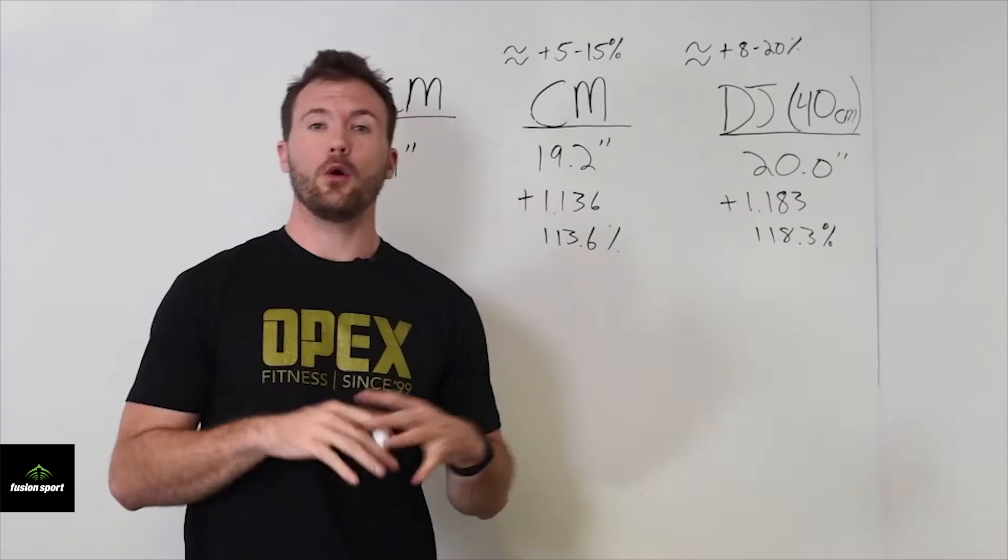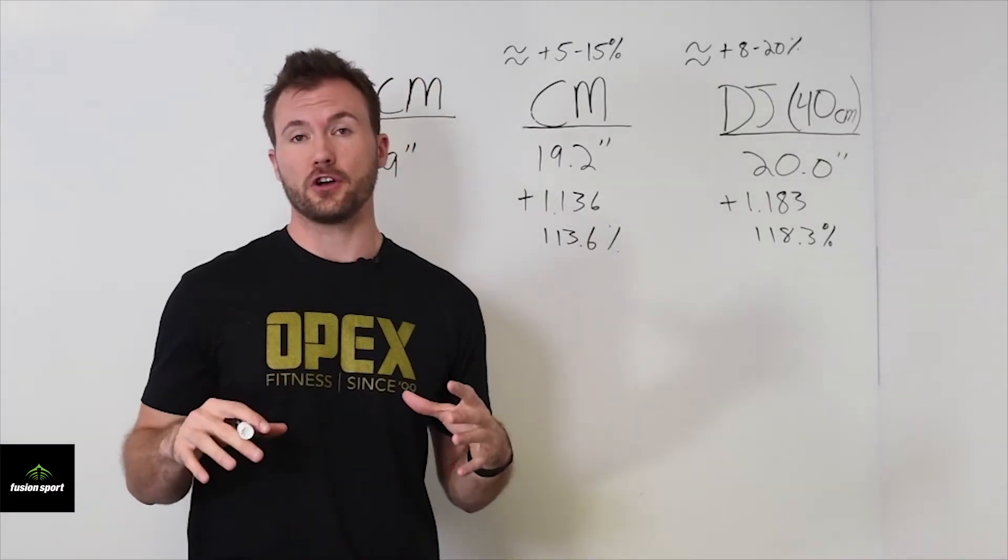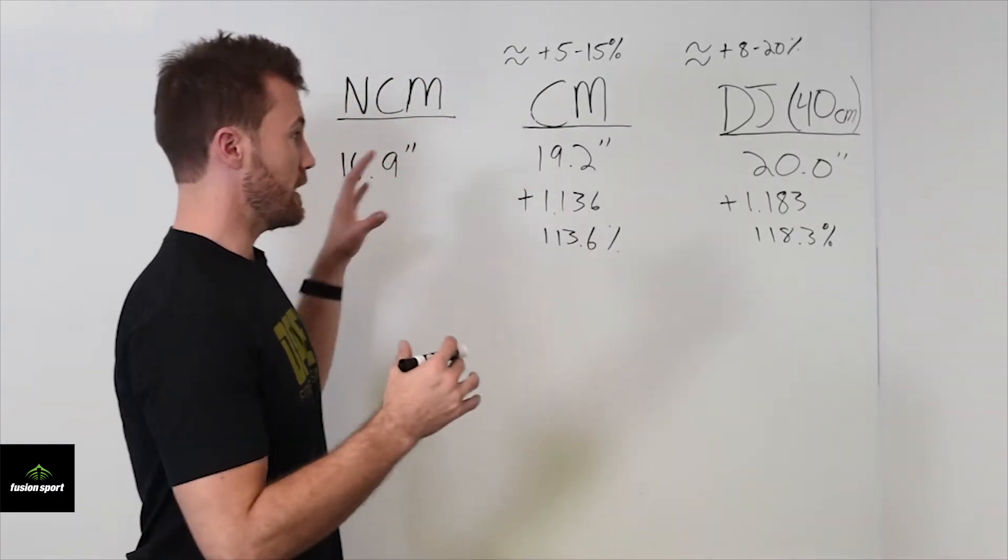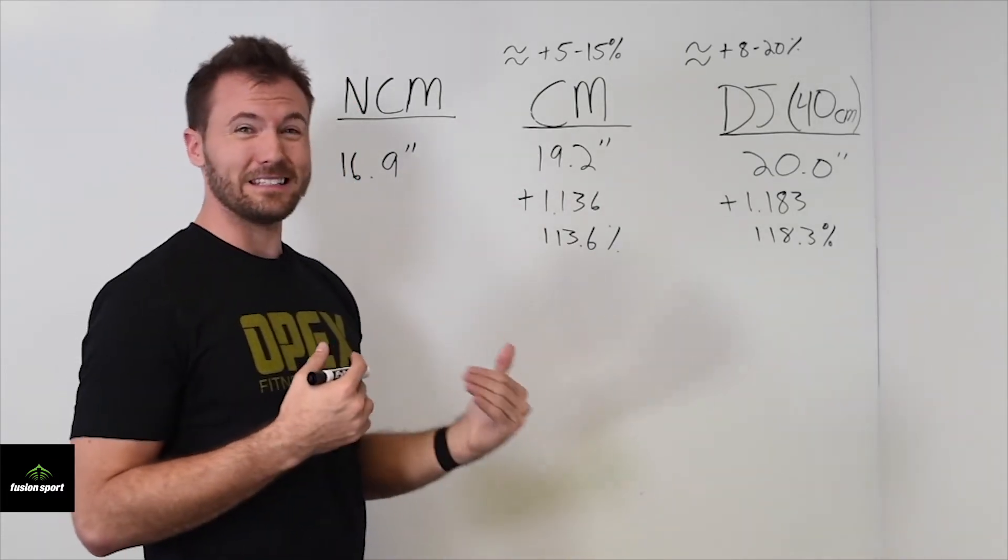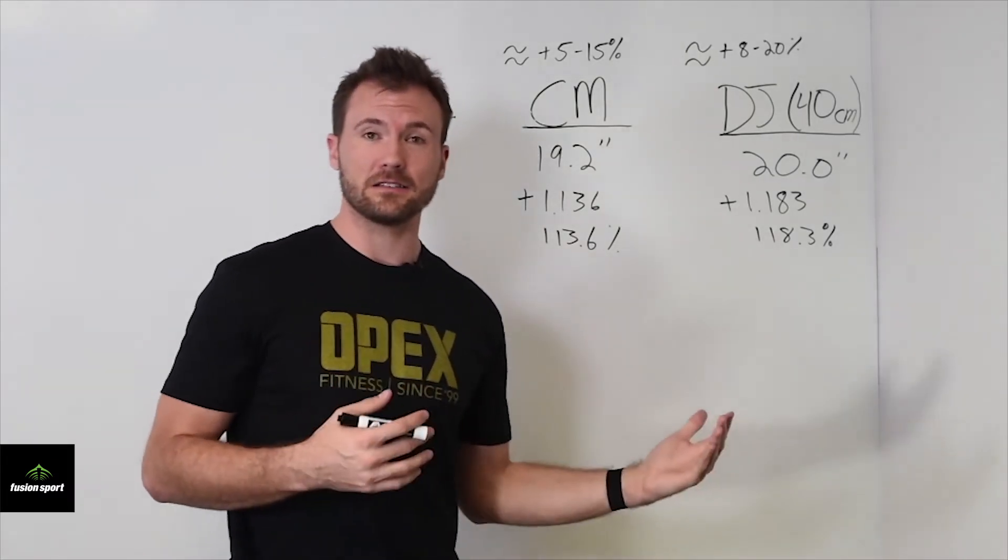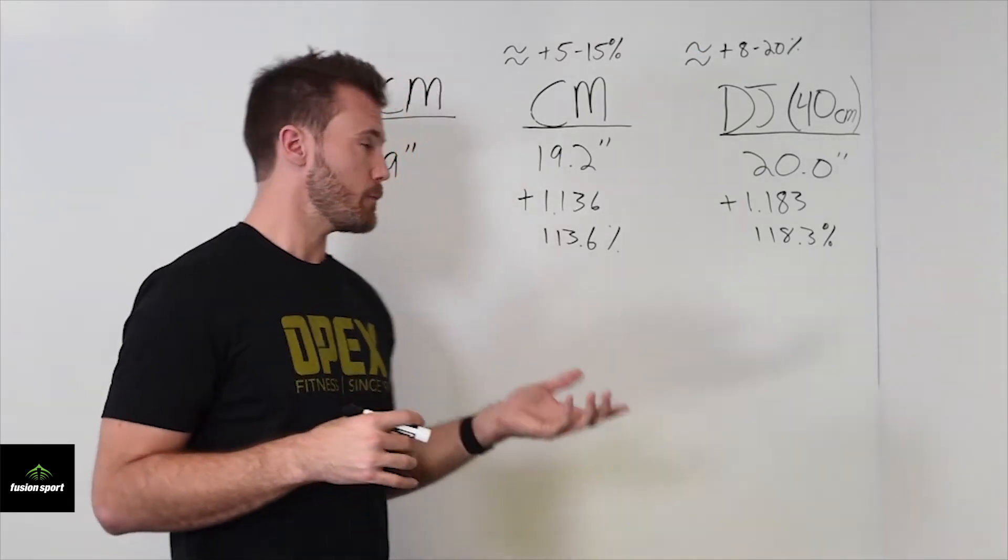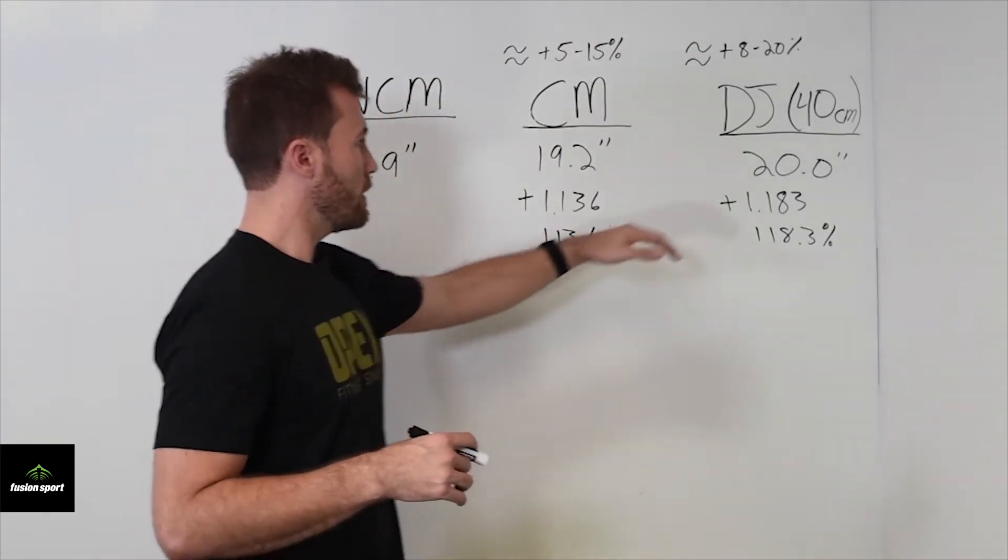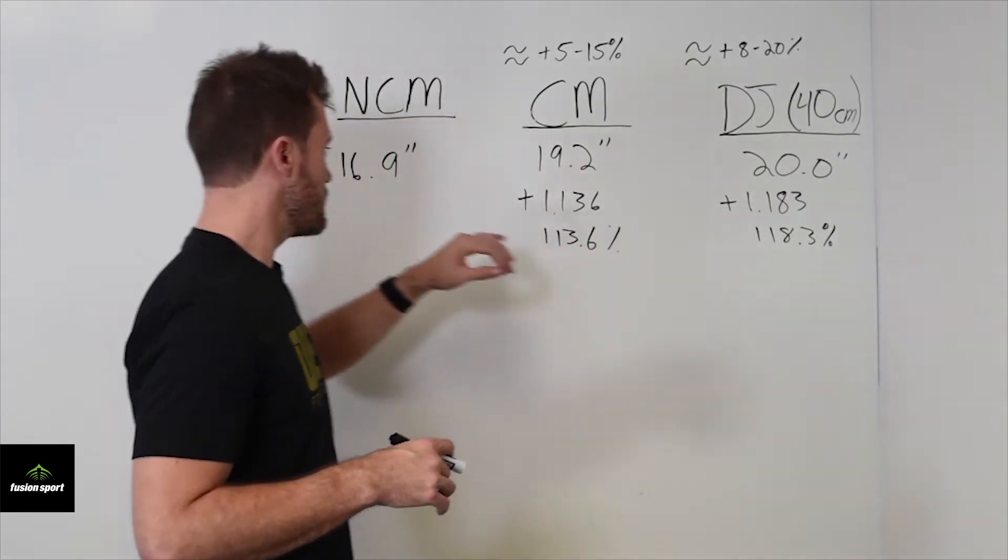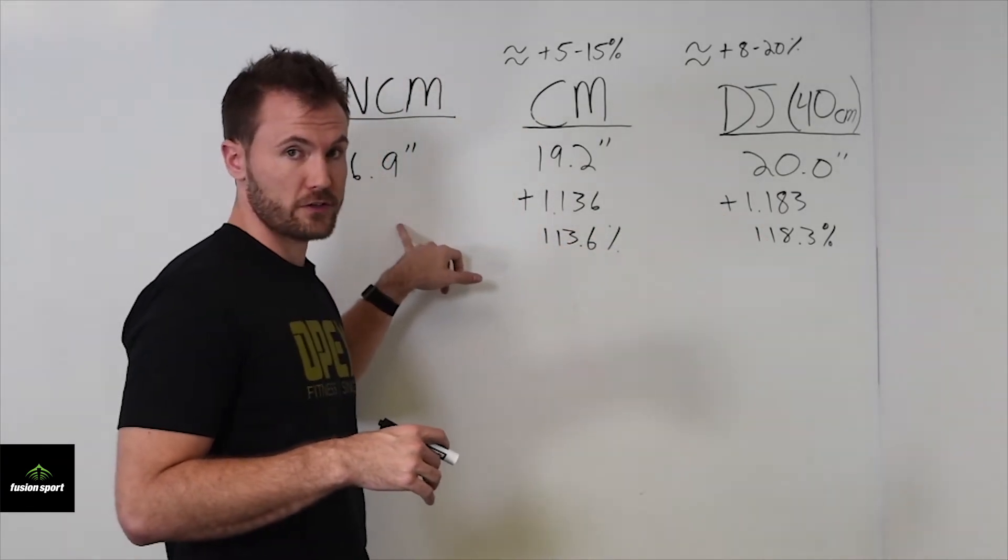So knowing that no assessment can ever give you the full picture of an athlete's profile, this data begins to give us an idea of what James' athletic essence is. It helps us determine his athletic essence by giving us an idea of his power and reactive strength qualities versus his starting strength qualities.